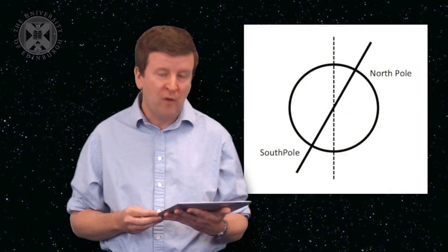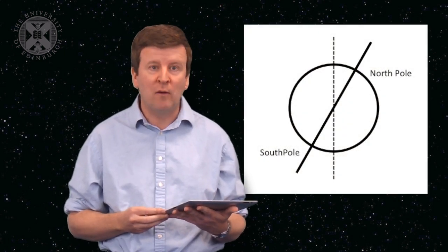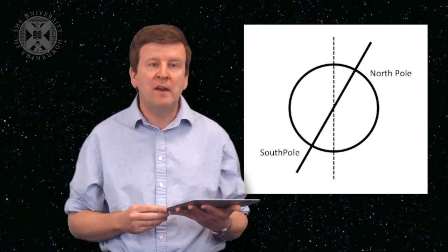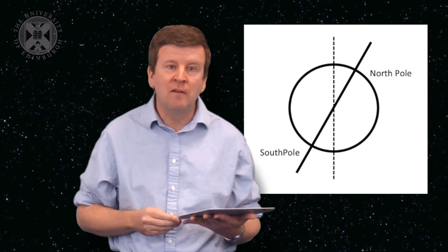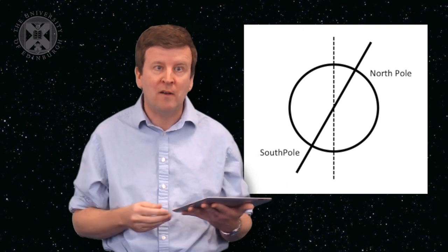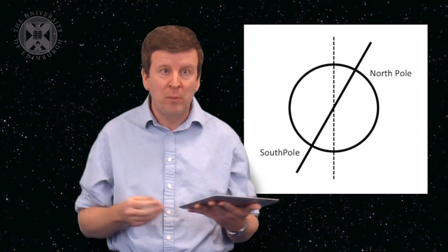People have also speculated on other requirements for habitability. For example, some people think that a moon is very important for a planet to be habitable. In our own case, our own moon is responsible for stabilizing the tilt of our planet or the obliquity. If we didn't have a moon, the tilt of our planet would vary wildly over tens of thousands of years and this would change the climate very dramatically over relatively short periods, at least geologically speaking. Some people say that if we had no moon, the climate would vary so wildly it would really be difficult for life to become sustained on the planetary surface.